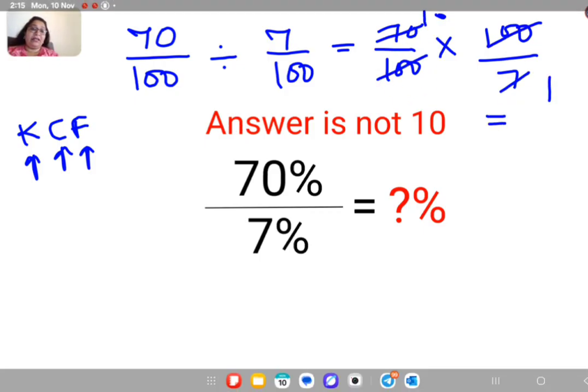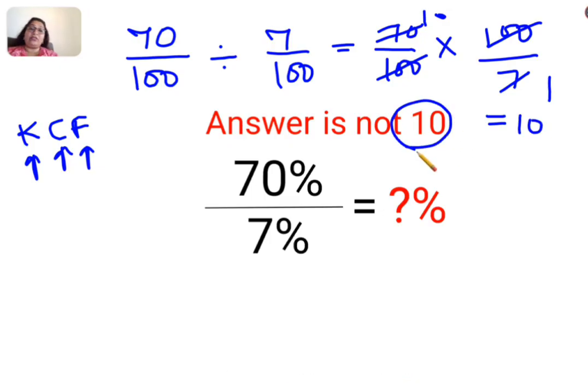So yes, the answer is coming out to be 10 but I am saying yet it is not equal to 10. Why like that? Because they are looking for the answer in terms of percentage.